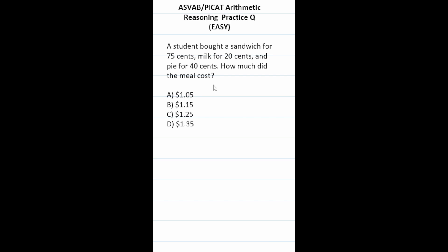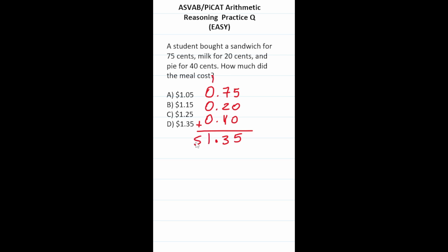This ASVAB PyCat arithmetic reasoning practice test question says a student bought a sandwich for 75 cents, milk for 20 cents, and pie for 40 cents. How much did the meal cost? We write these as 0.75, 0.20, and 0.40 and add them up. 5 plus nothing is 5; drop the decimal; 7+2+4=13, write 3 carry 1; 1 plus nothing is 1. So the meal cost $1.35, answer D.